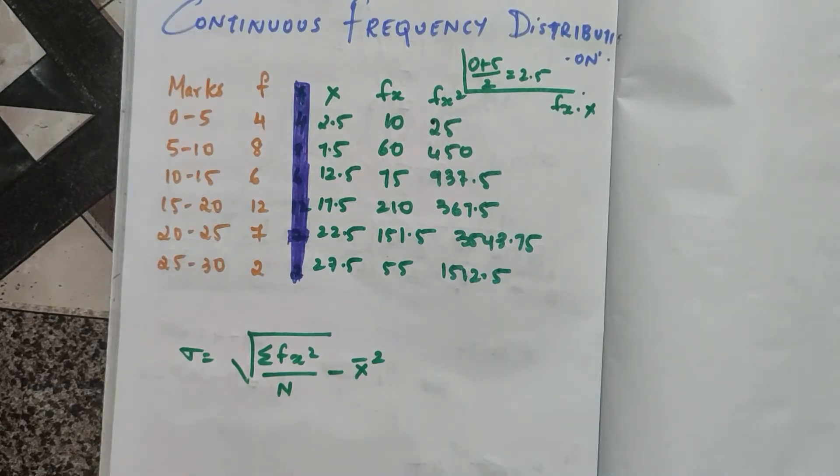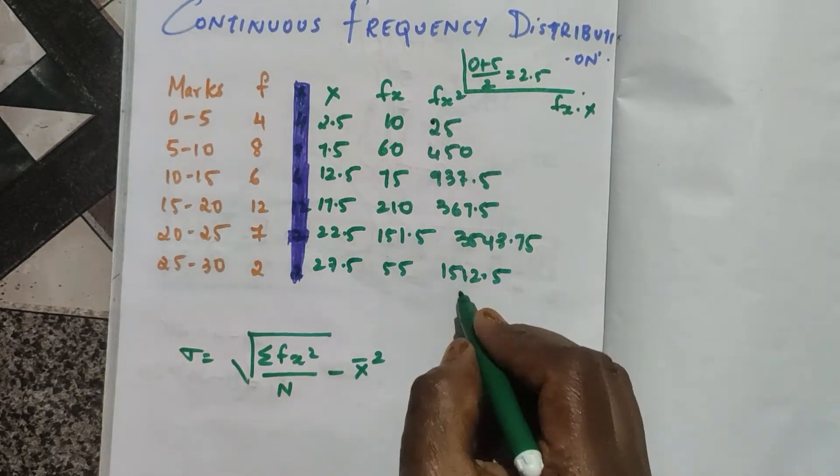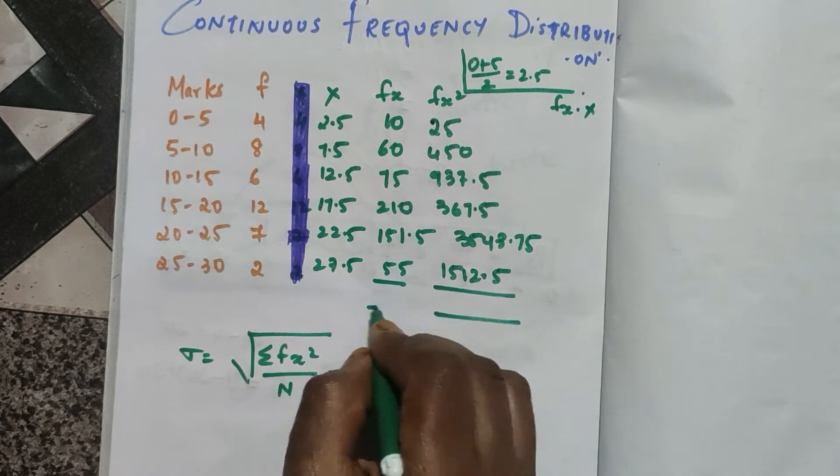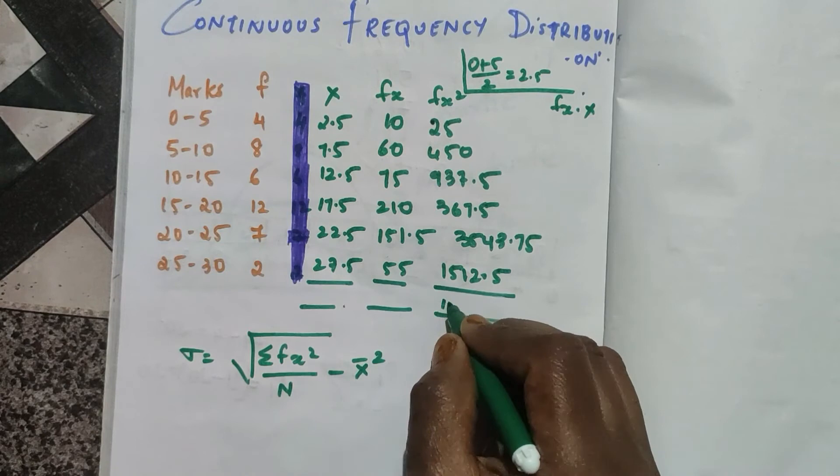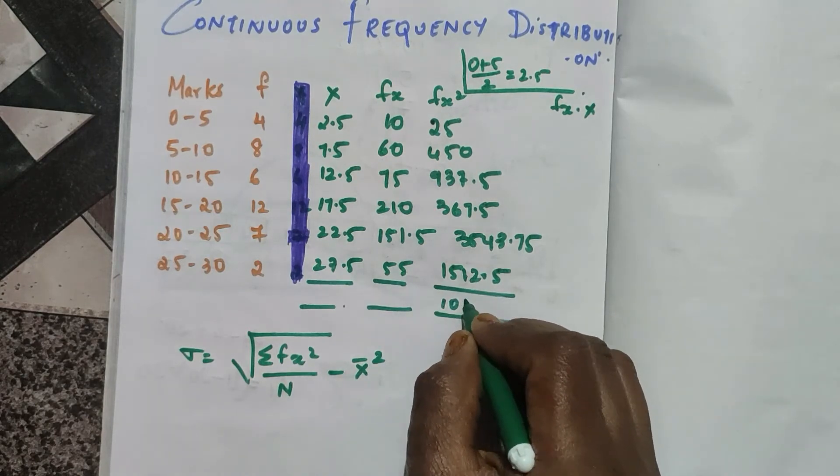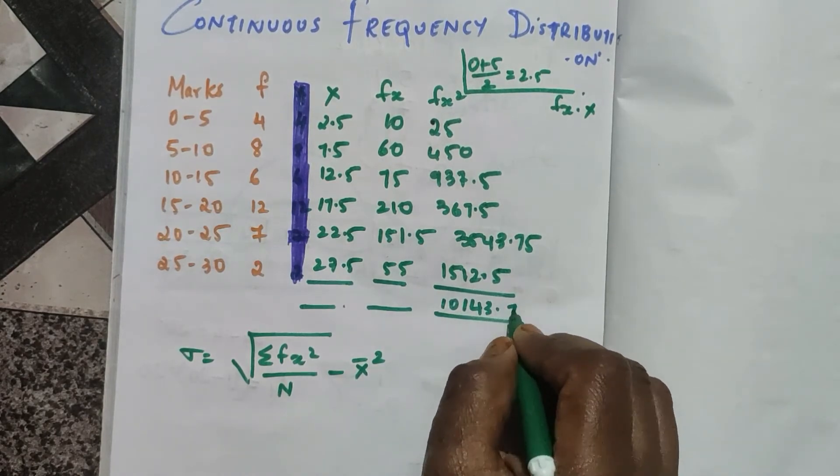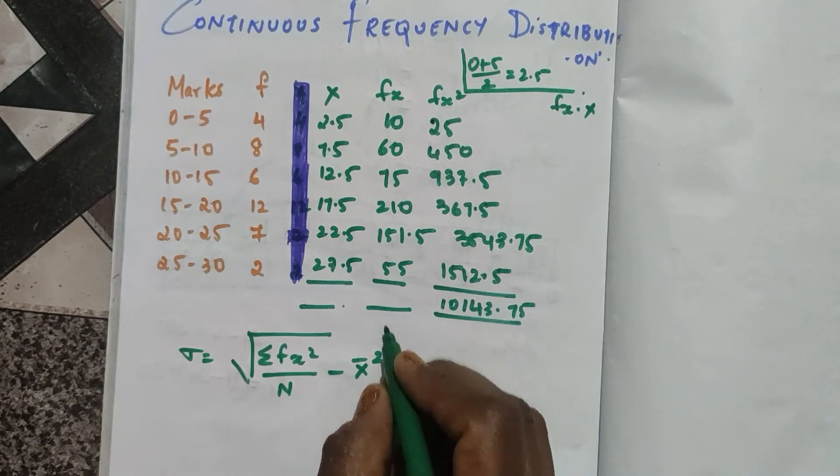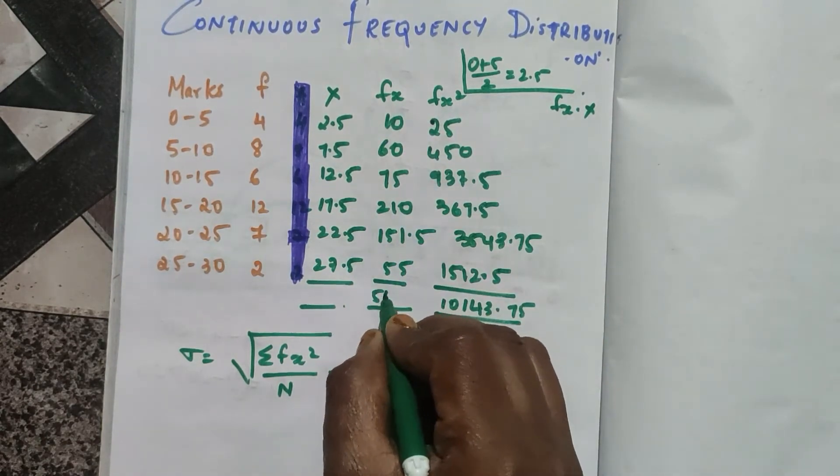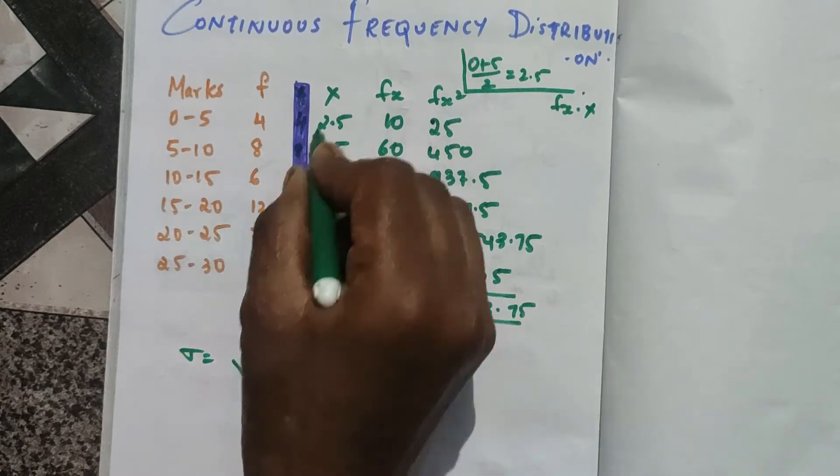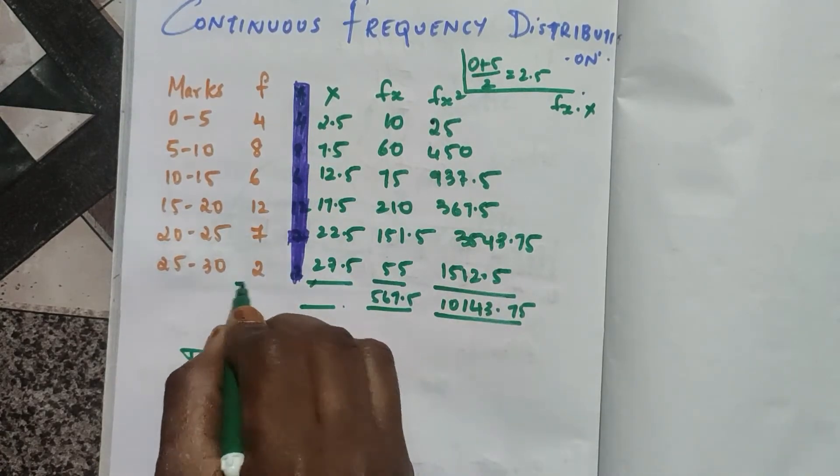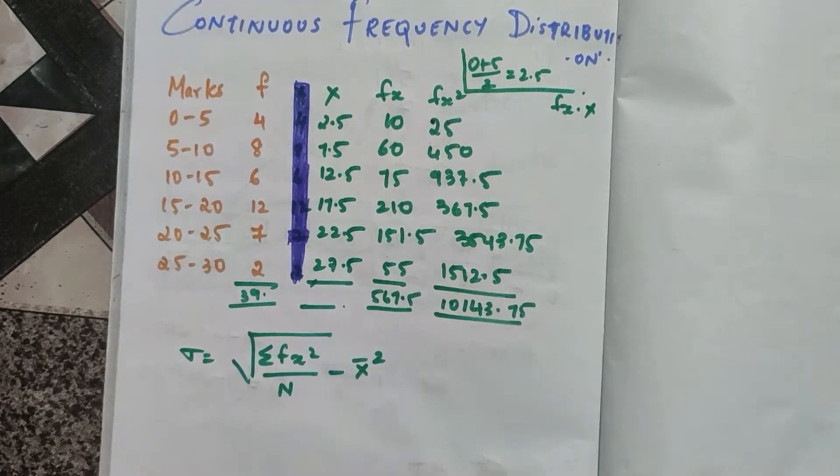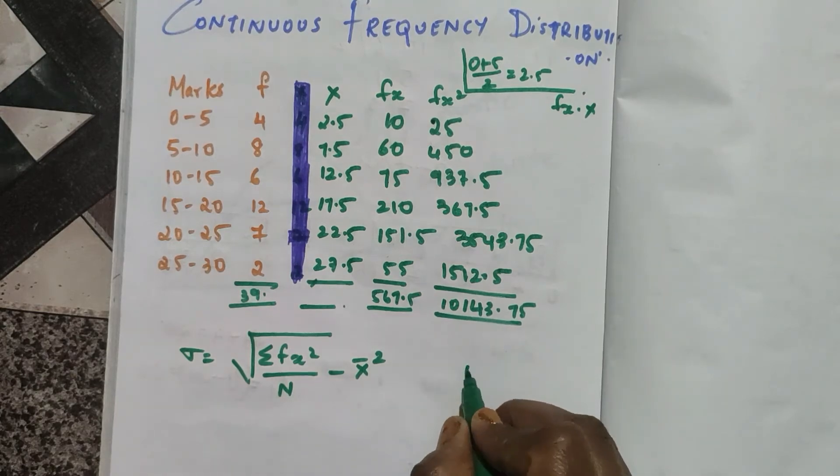Now we found fx square. Let's find all the total values. If I add the fx square values I get 10,143.75, and the f values add up to 39. N is nothing but summation f, so my n value is 39.